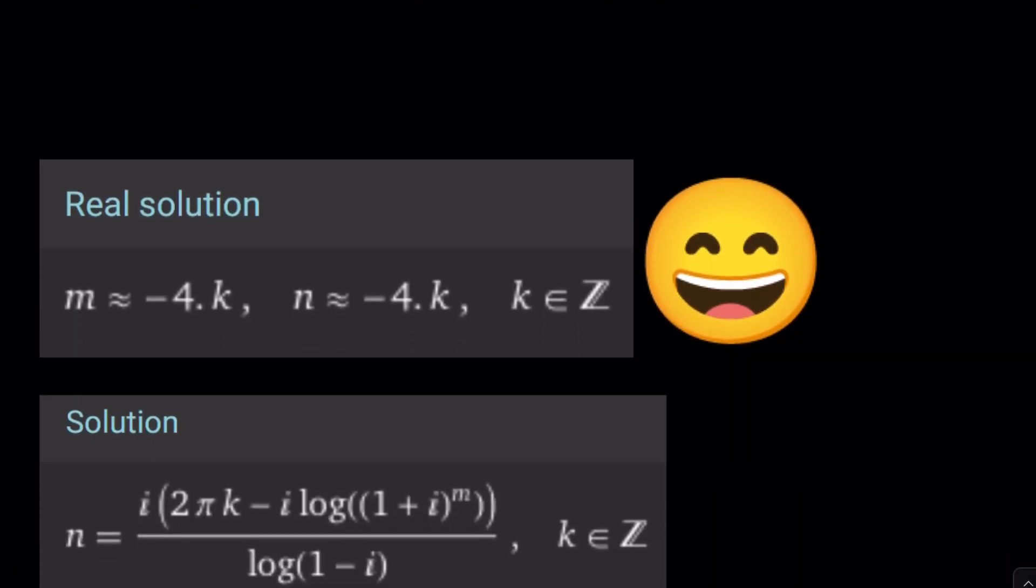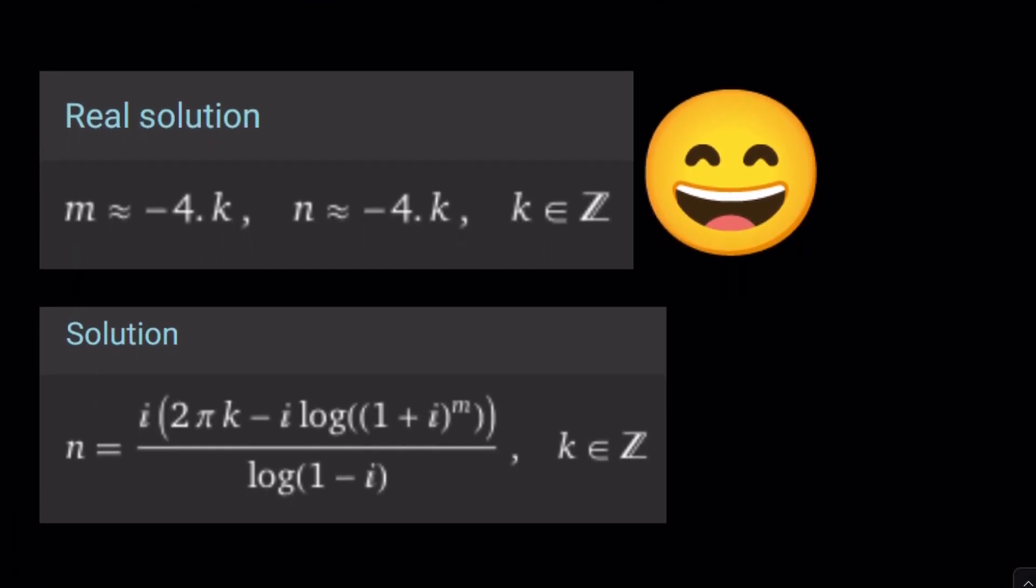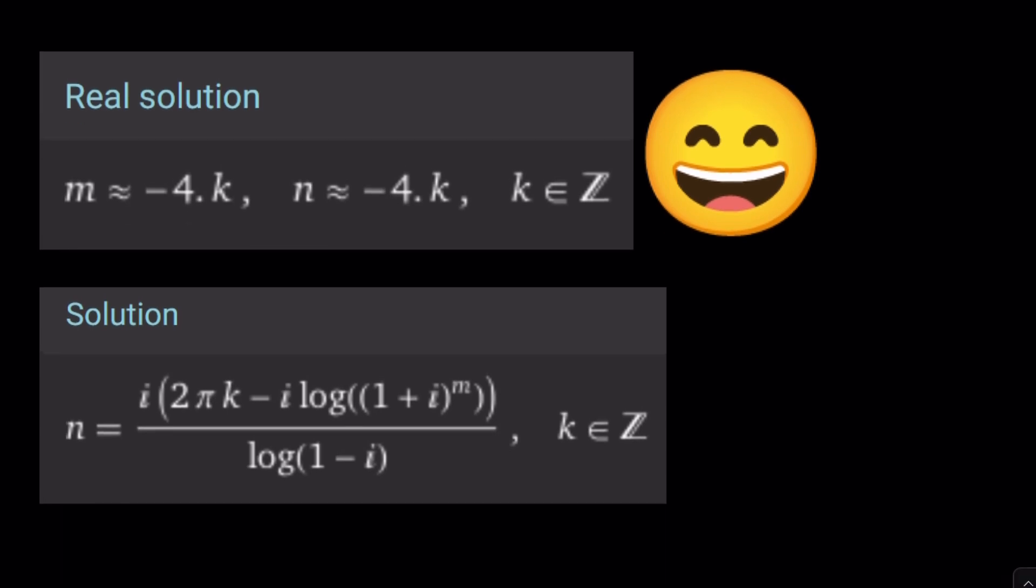Do I have anything from Wolfram Alpha? Yes. Wolfram Alpha, in such a weird way, gives us the approximate solutions as negative 4k and negative 4k. I don't know why it uses a negative and why does it have squiggly lines. And here's another solution, go figure.